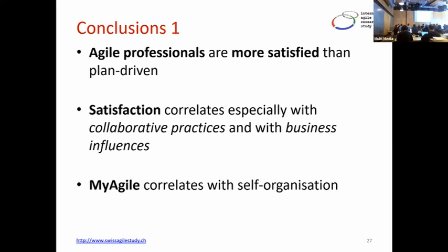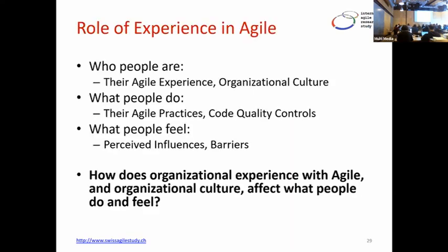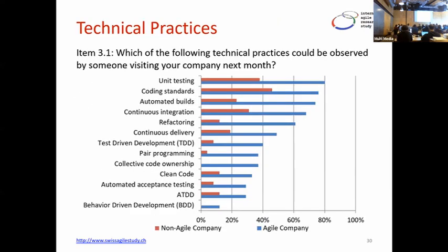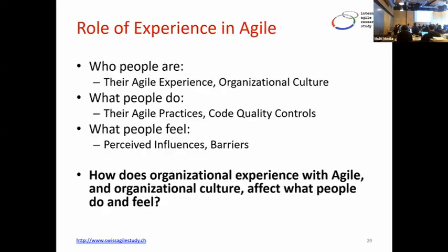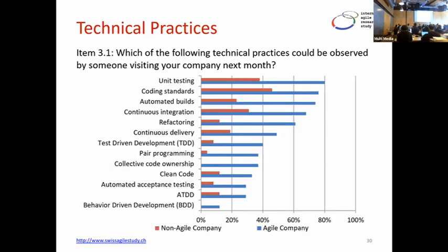Now shifting to experience and culture — how the experience of individuals affects software development teams and company culture. The research question: how does organizational experience with agile and organizational culture affect what people do and feel? Looking at technical practices, red represents non-agile and blue represents agile. Agile teams were significantly more experienced with unit testing, coding standards, automated builds, continuous integration, and refactoring. Even plan-driven teams did some peer programming. Collective code ownership was not prevalent at all in non-agile teams.